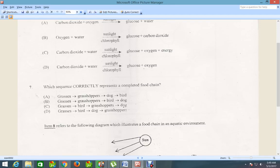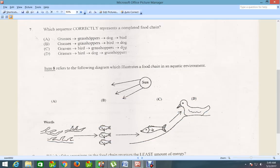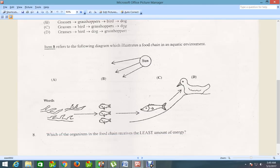Moving down, item 8 refers to the following diagram which illustrates a food chain in an aquatic environment. Let's see what the question is saying.